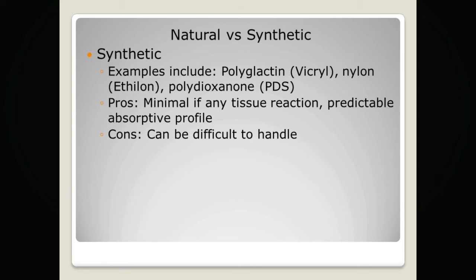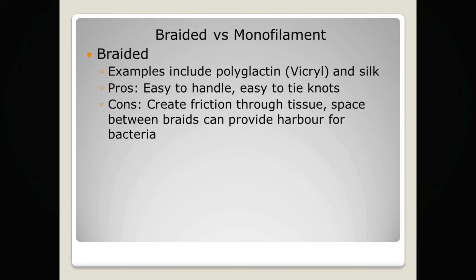When thinking about suture construction, we classify sutures as braided or monofilament. Braided sutures include polyglactin and silk. The pros are that they are easy to handle and tend to be easy to tie knots in — a good thick silk suture is often a good suture to start practising knot tying with because the knots hold very well. The problem with the braided structure is that as the suture moves through tissue it creates more friction than a monofilament, and bacteria can harbour between the braids, increasing the risk of infection.